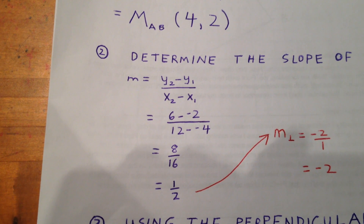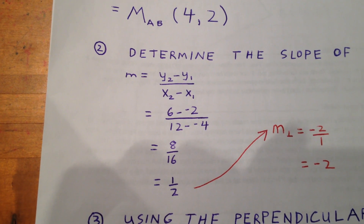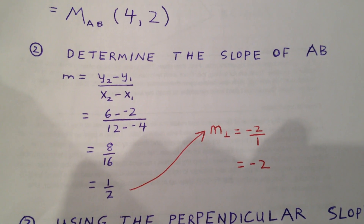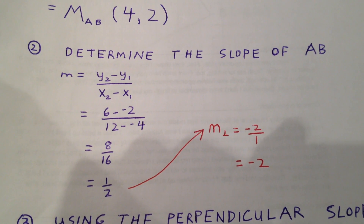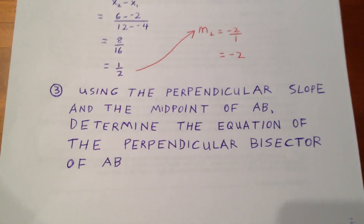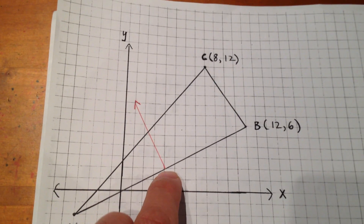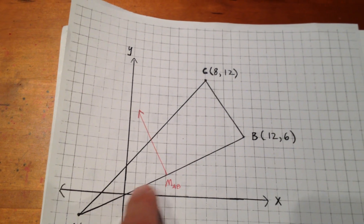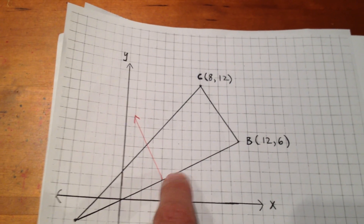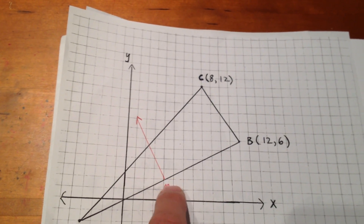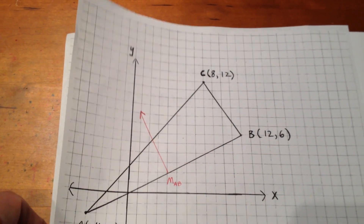Remember that the circumcenter involves perpendicular bisectors, so we want the perpendicular slope. If the original slope is 1/2, the perpendicular slope will be the negative reciprocal, which is -2. Using the perpendicular slope and the midpoint of AB, we're going to determine the equation of the perpendicular bisector of AB.